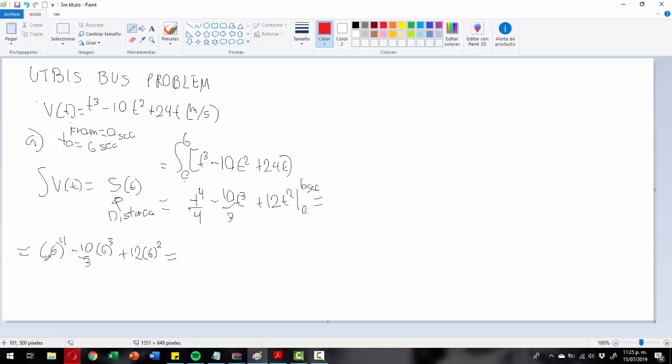That is the result of integrating this part from 0 to 6 seconds. Now we have to evaluate it at 6 and 0, but we know that 0 is going to give us 0. Zero times 0 is 0 divided by 4 is 0, and so on. So there is no need to do that.